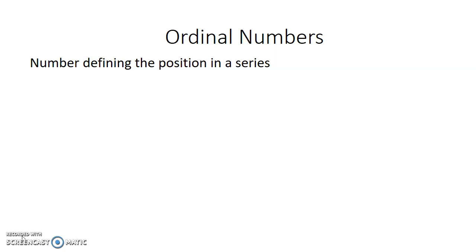Series means there are a set of numbers. So if the set of numbers are arranged in some form, the position of a particular number is called the ordinal number. One set of numbers arranged in some form — one particular number's position is called the ordinal number.